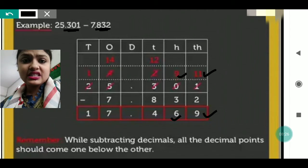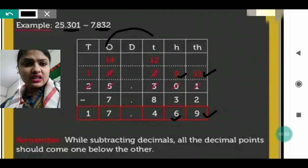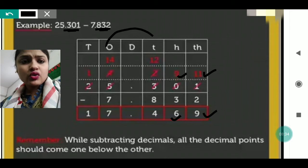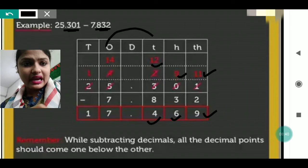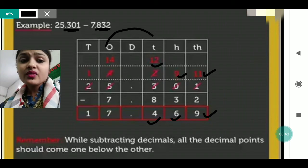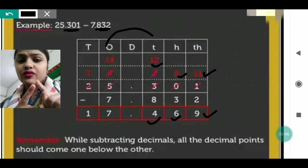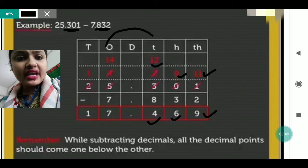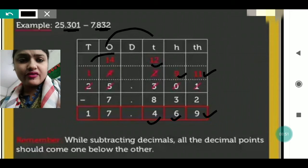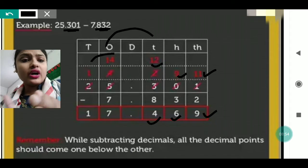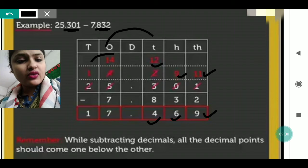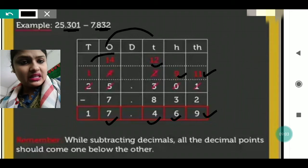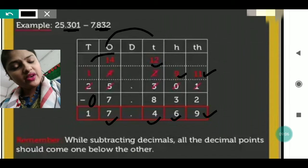Two minus eight is not possible, so it moves to the ones place. Five gives one to two, making it twelve. Twelve minus eight is four. Then four minus seven is not possible, so four takes one carry from the adjacent number, making fourteen. Fourteen minus seven is seven. Finally, one minus zero is one.